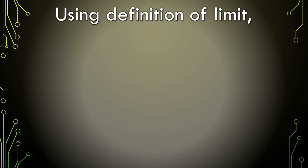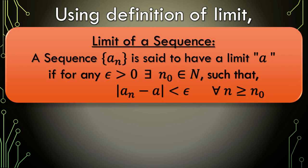Now we are going to use the definition of limit for a sequence. A sequence a_n is said to have a limit a if for any epsilon greater than 0, there exists n_0 belonging to the natural numbers such that |a_n − a| < epsilon for all n ≥ n_0. Epsilon is a very small positive number just greater than 0, and n_0 is any natural number that changes with epsilon. So no matter how small a positive epsilon you choose, there exists a natural number n_0 such that when n ≥ n_0, the distance of the nth term from its limit becomes smaller than epsilon.